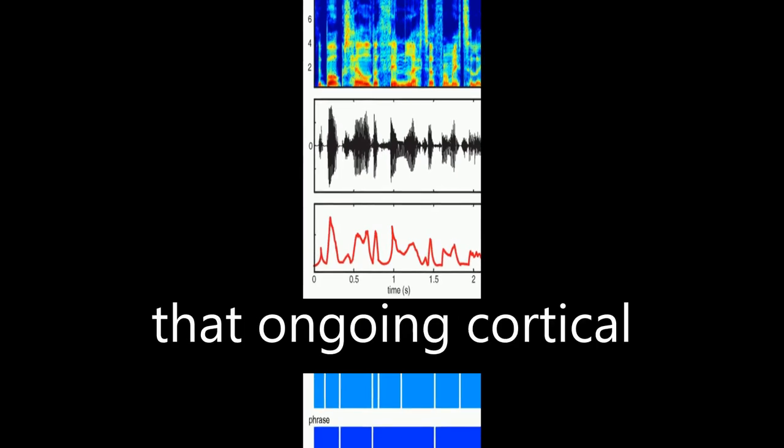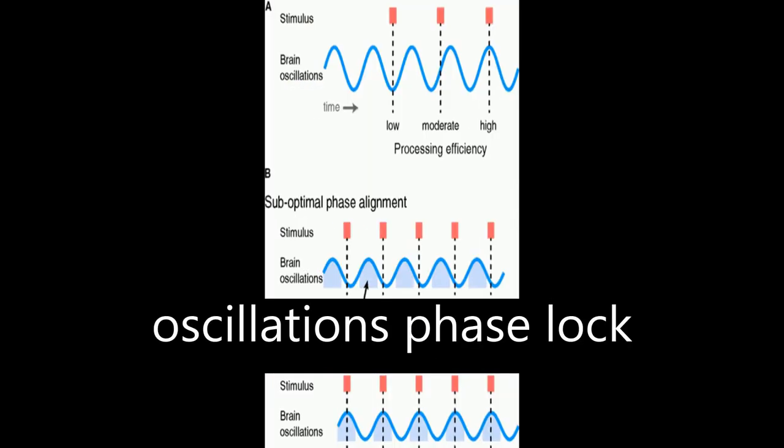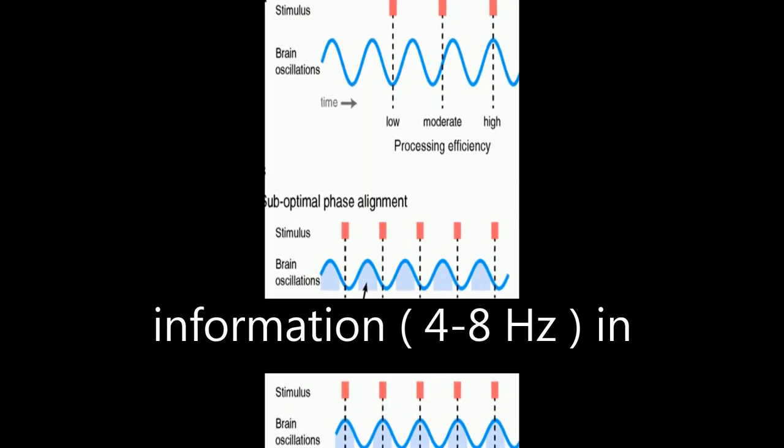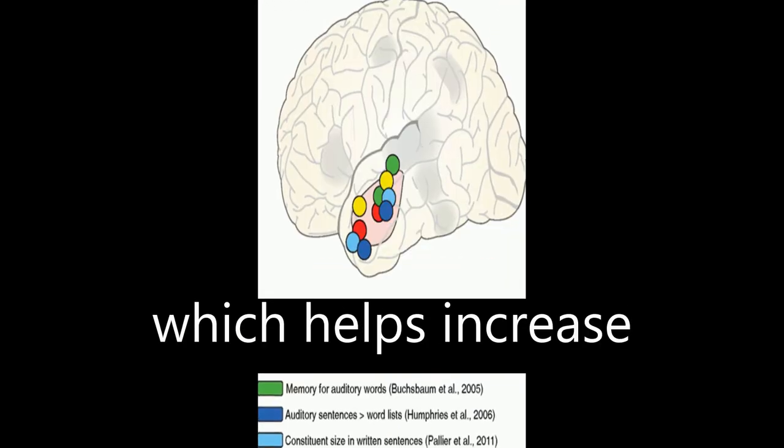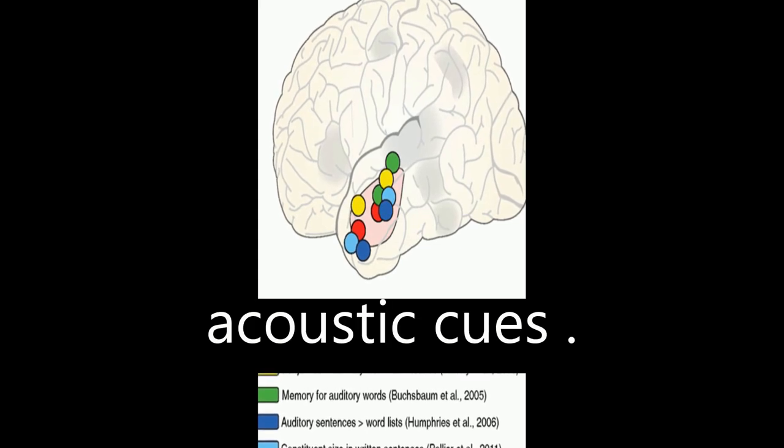Neuroimaging data shows that ongoing cortical oscillations phase lock to low-frequency information 4 to 8 Hz in the speech envelope, which helps increase sensitivity to relevant acoustic cues.